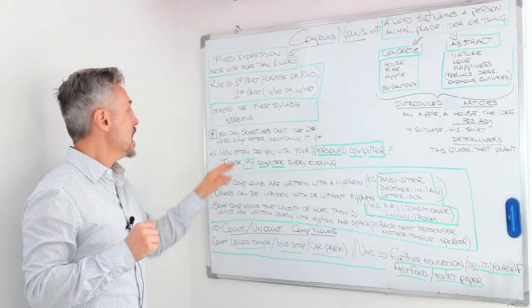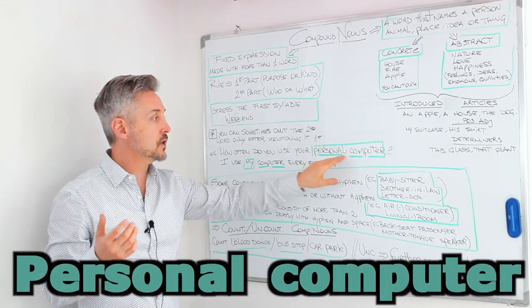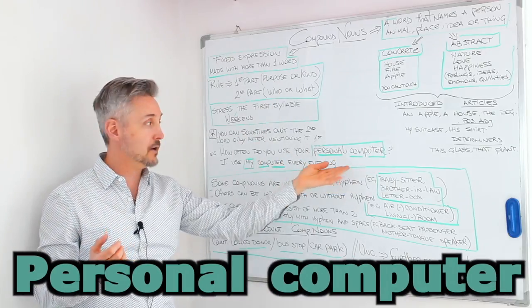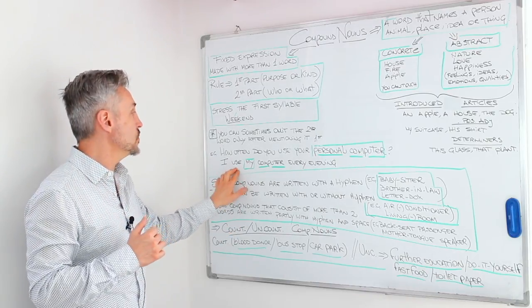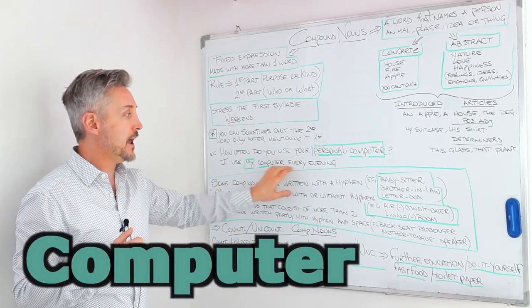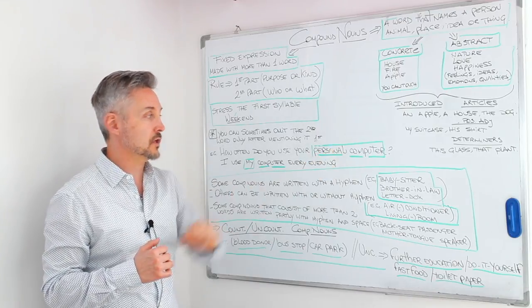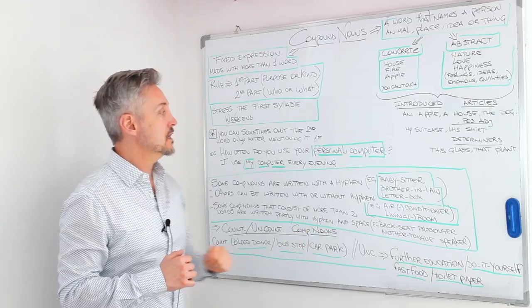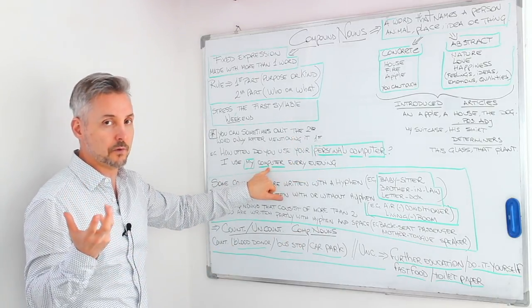So, for example, how often do you use your personal computer? Personal computer here is the compound noun, right? And I can answer, I use my computer every evening. So, I don't need to mention personal. I just omit personal and I just mention the computer.